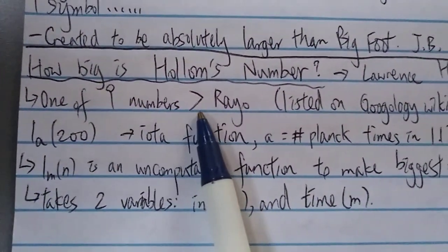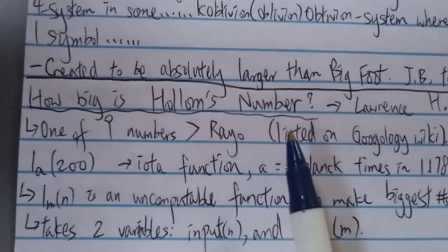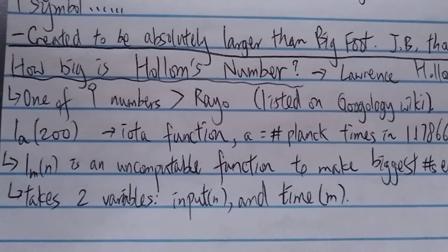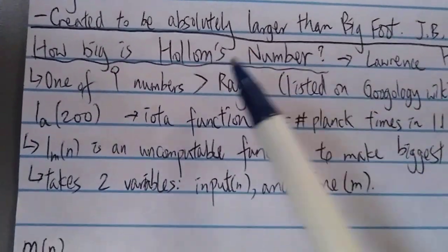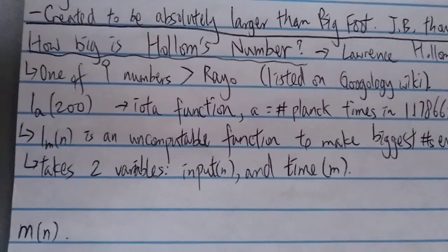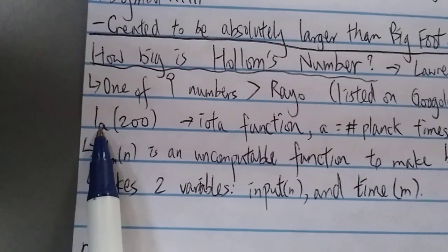What is this number? It is actually one of the nine numbers listed on the Googleology wiki that is bigger than Rails number. If you look at Googleology wiki, I think there's only nine or ten numbers listed there that is bigger than this, at least in that category, the uncomputable big numbers.